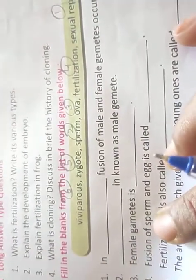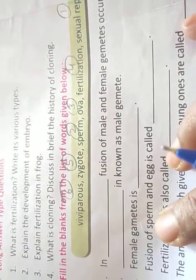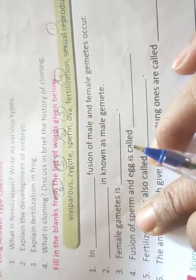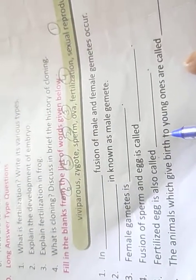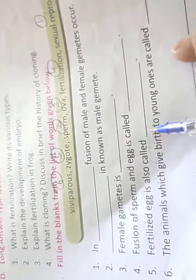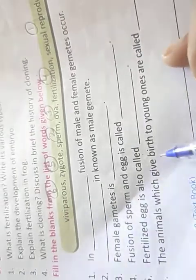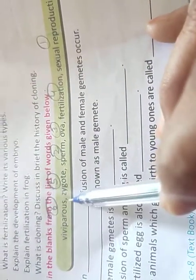Second: is known as male gamete - sperm. Third: female gamete is ova, O-V-A. Fourth: fusion of sperm and egg is called fertilization, F-E-R-T-I-L-I-Z-A-T-I-O-N. Fertilized egg is also called zygote, Z-Y-G-O-T-E. The animals which give birth to young ones are called viviparous, V-I-V-I-P-A-R-O-U-S.